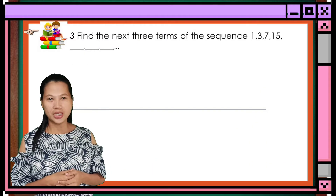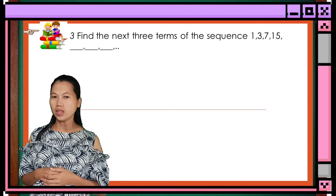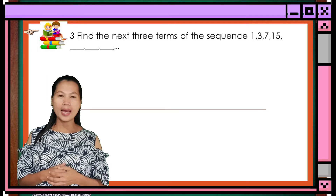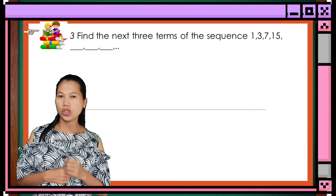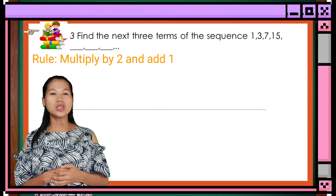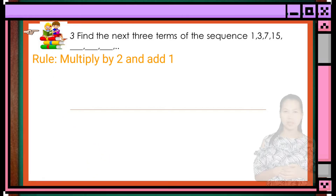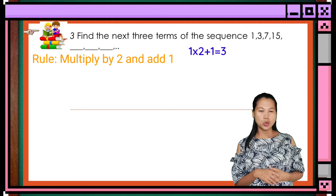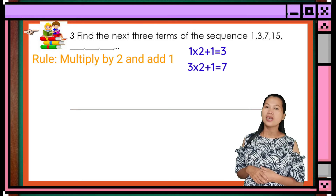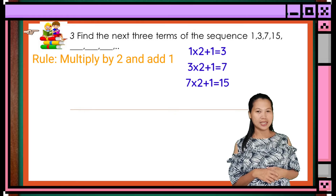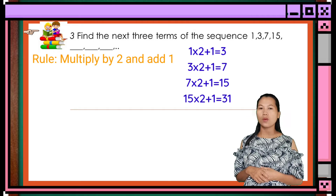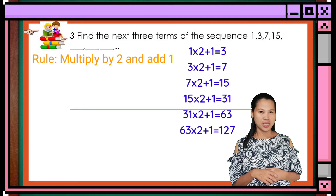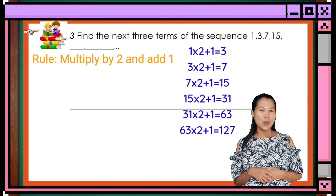We have our third example. Find the next 3 terms of the sequence: 1, 3, 7, 15, blank, blank, blank. Solution: the rule is multiply by 2 and add 1. So, 1 times 2 plus 1 equals 3. 3 times 2 plus 1 equals 7. 7 times 2 plus 1 equals 15. 15 times 2 plus 1 equals 31. 31 times 2 plus 1 equals 63. 63 times 2 plus 1 equals 127.